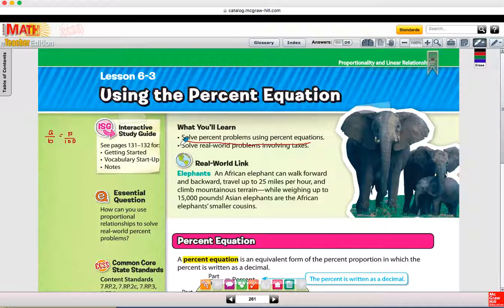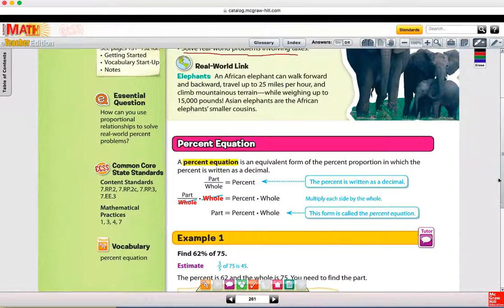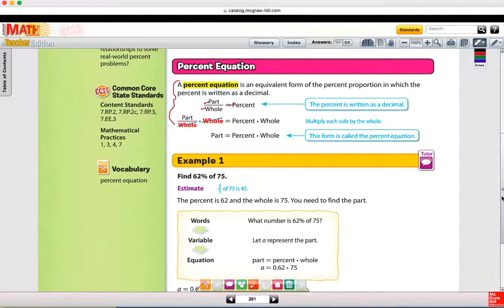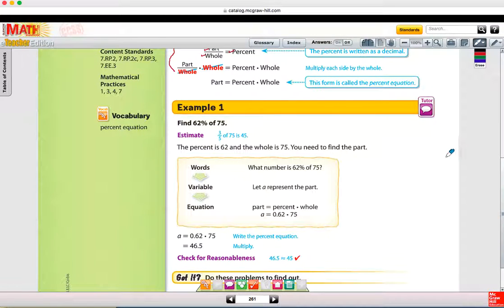That is yet another strategy for you to solve problems involving taxes and other situations where we're solving percent problems. The vocabulary word is percent equation. Notice there are some of the same vocabulary words: part, whole, and percent. And if we multiply both sides by the whole, we get that the part is equal to the percent times the whole. It's not just made up, it does have an explanation behind it.